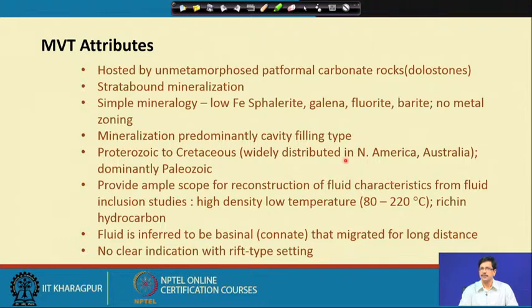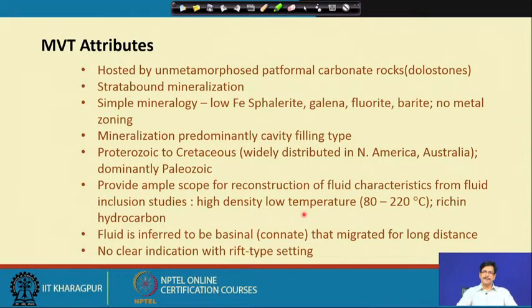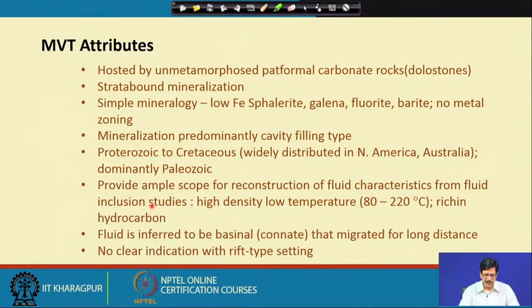The deposits range in age from Proterozoic to Cretaceous, widely distributed in North America, but dominantly Paleozoic, with some Australian occurrences as well. Fluid inclusion studies indicate a very high-density but low-temperature fluid of 80 to 220 degrees Celsius. The ore fluid is very characteristic in that it has an appreciable hydrocarbon concentration — fluid inclusions show a very significant component of methane and heavier hydrocarbons, making them almost look like oil-filled brines.